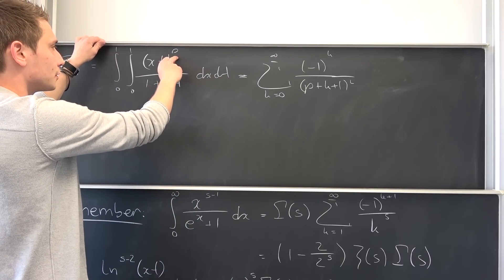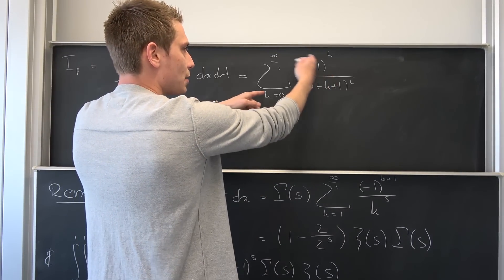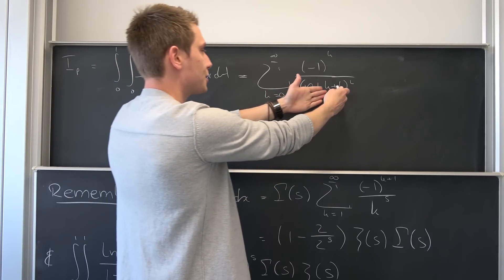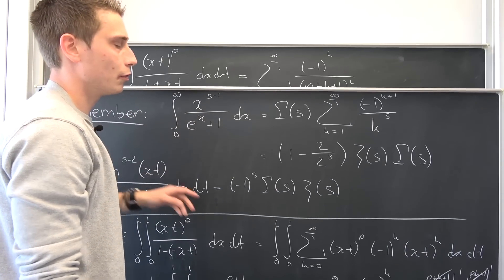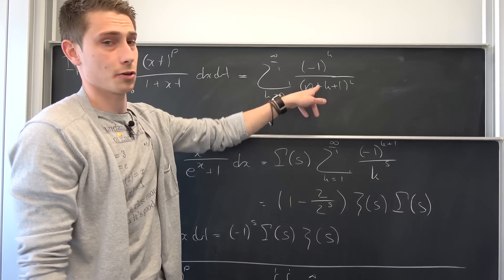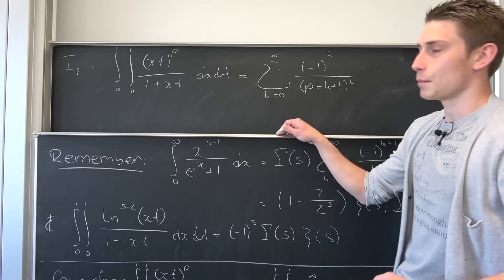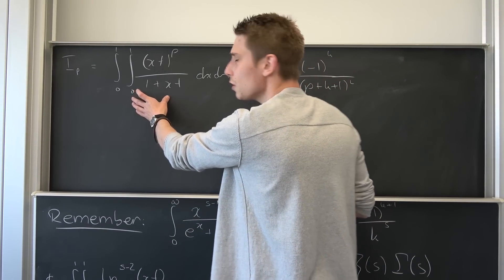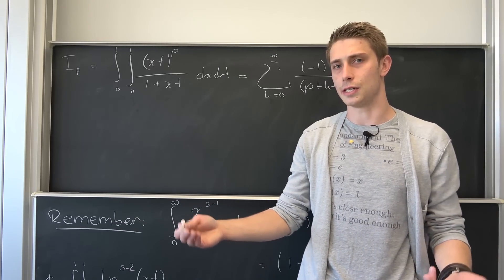And you see, if we let p go to 0, we basically end up with this sum: negative 1 to the k-th power over k plus 1 squared. You can change the index — let k plus 1 equal n — and you actually end up with the Dirichlet eta function of 2. This is the same thing we did with the Basel problem. What we want to do now is use the Leibniz rule for differentiation: we want to differentiate this integral and also the right-hand side with respect to p, and see if we can see a certain pattern.